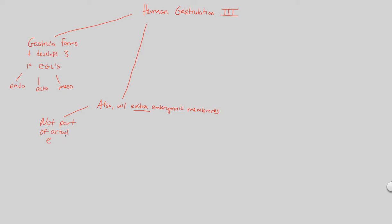They're not part of the actual embryo but still absolutely critical for embryo success. Because they're not part of the actual embryo, they will be discarded at birth. So what are these extraembryonic membranes and why are they being formed?